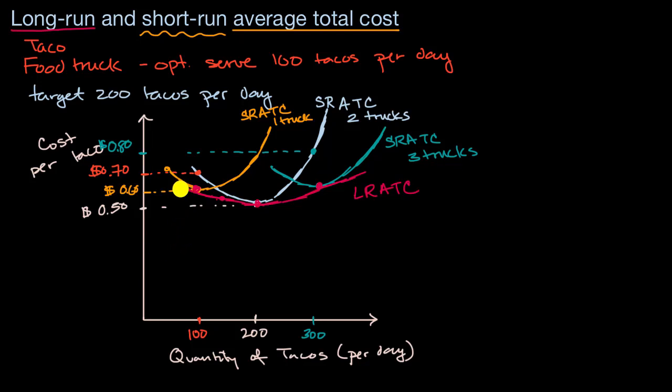In the last video, we were able to construct here in red this long-run average total cost curve based on connecting the minimum points or the bottoms of the U's of our various short-run average total cost curves.